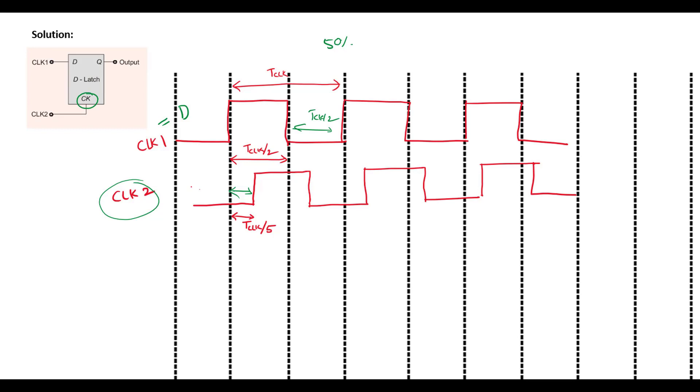So from the truth table we know that when the enable input is 1, that means when this clock 2 is high, simply the output of the D latch follows the input. So if the input is 1, it will be 1. If the input is 0, the output will be 0. So if the clock signal CLK2 is 0, that means enable input of this D latch is 0, so output will be retained. When this enable input is 1, it will simply follow the input.